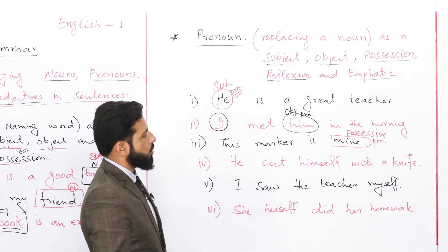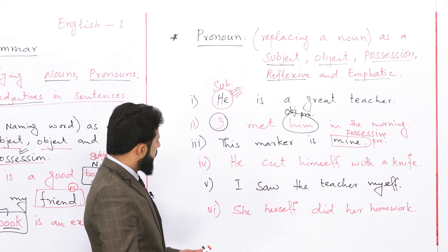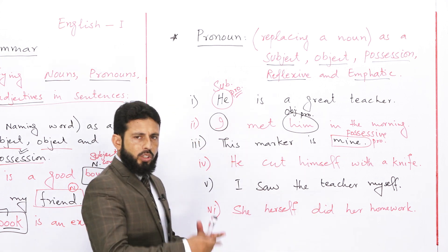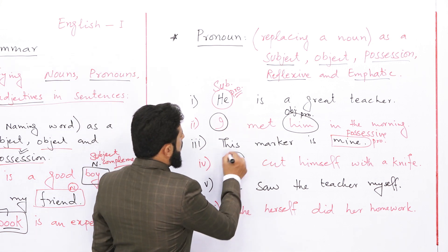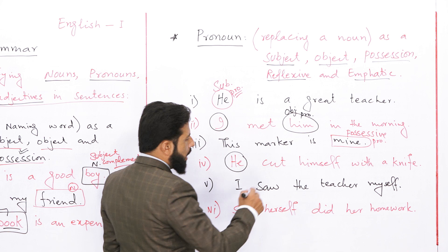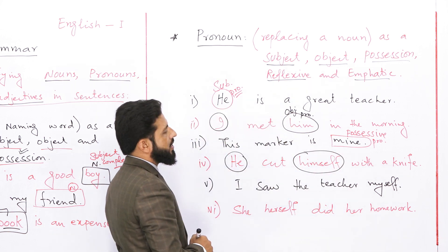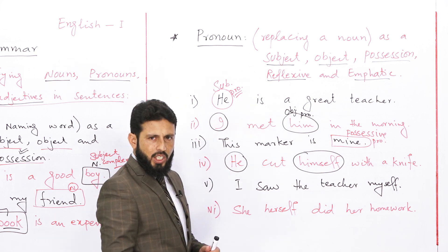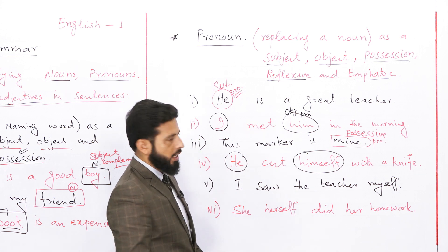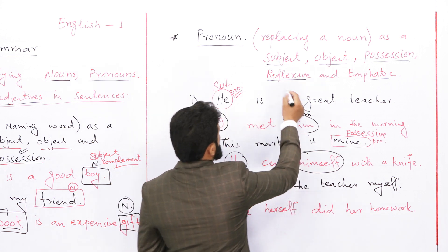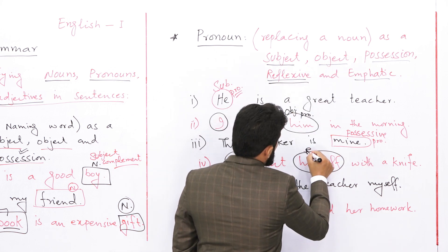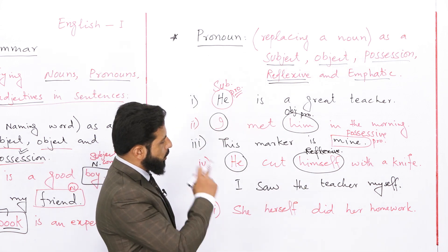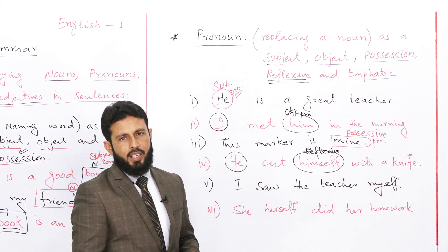Sentence number 4 دیکھیں: 'He cut himself with a knife'۔ اس نے اپنے آپ کو چھری سے کاٹ لیا۔ یہاں 'he' بھی pronoun ہے اور 'himself' بھی pronoun ہے۔ 'He' subjective case ہے یعنی subject of the sentence ہے، اور 'himself' reflexive pronoun ہے۔